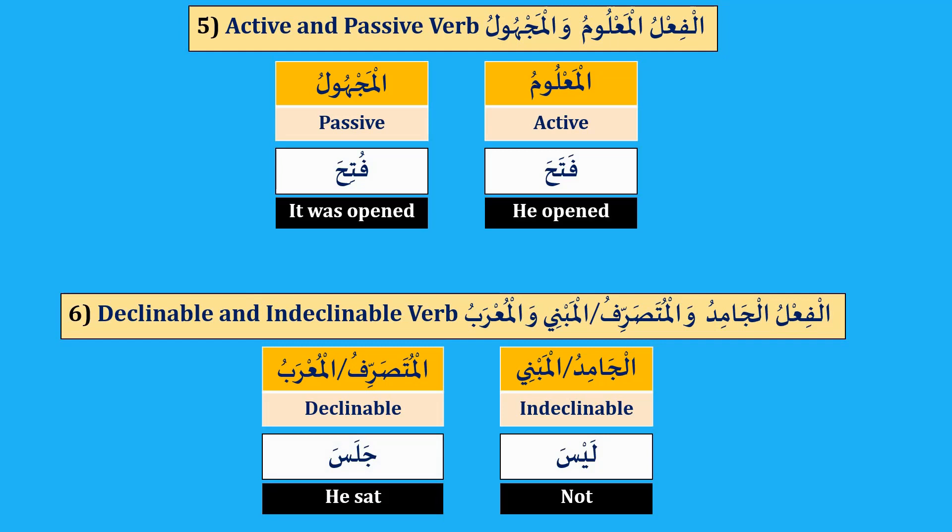We already learned in our previous lessons the first category of the verb: al-Madi, past tense; al-Mudari', present tense; and al-Amr, imperative. But we are going to learn in detail the other five categories of the verb, inshallah. And that's all for today — see you next lesson, inshallah. Wassalamu alaikum wa rahmatullahi wa barakatuh.